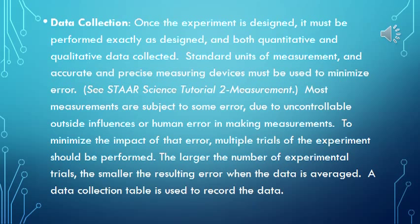Once the experiment is designed, it must be performed exactly as designed and both quantitative and qualitative data collected. Standard units of measurement and accurate, precise measuring devices must be used to minimize error. Most measurements are subject to some error due to uncontrollable outside influences or human error, so multiple trials should be performed. The larger the number of trials, the smaller the resulting error when data is averaged. A data collection table is used to record the data.